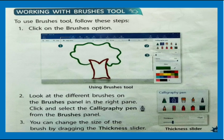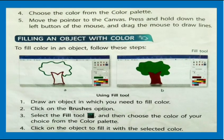Working with the Brushes tool: To use the Brushes tool, follow these steps. Click on the Brushes option. Look at the different brushes on the Brushes panel on the right. Click and select the Calligraphy Pen from the Brushes panel. You can change the size of the brush by dragging the thickness slider. Choose the color from the color palette, move the pointer to the canvas, press and hold the left mouse button, and drag to draw lines.